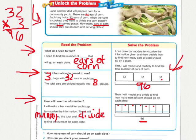5, 6, 7, 8 plates. So, we have to figure out how many are on each plate by doing 96 divided by 8.